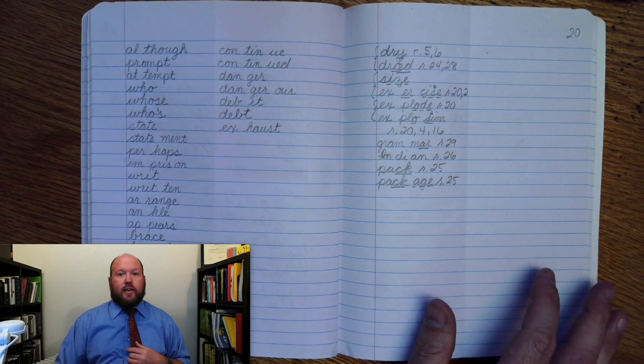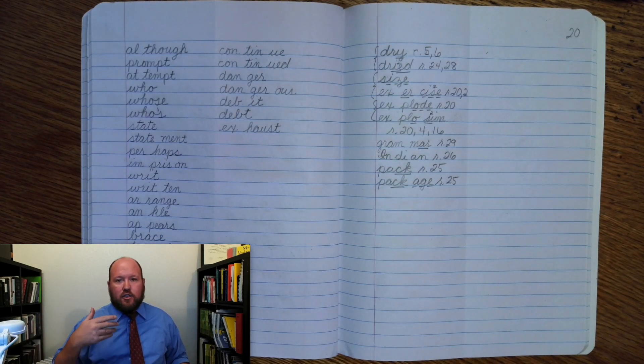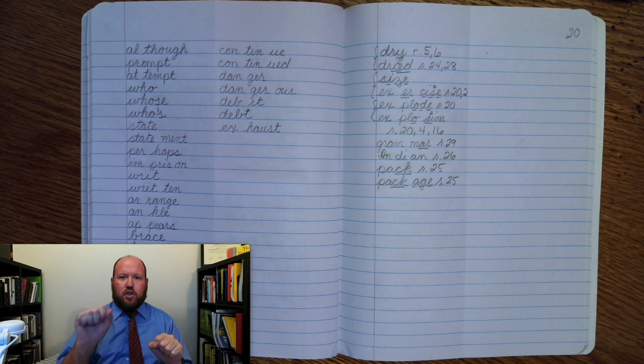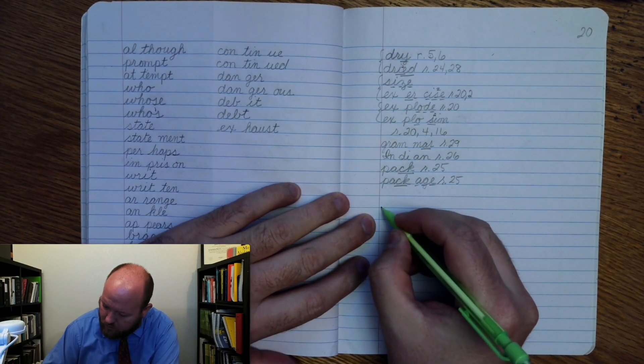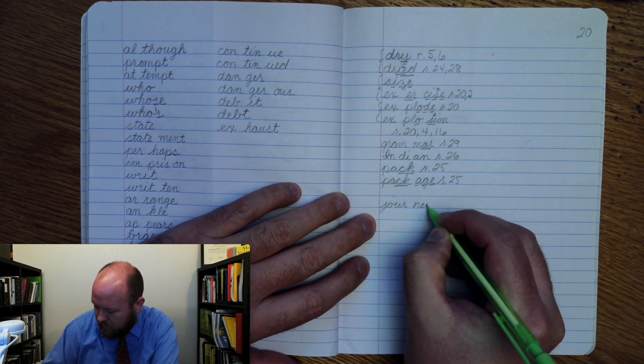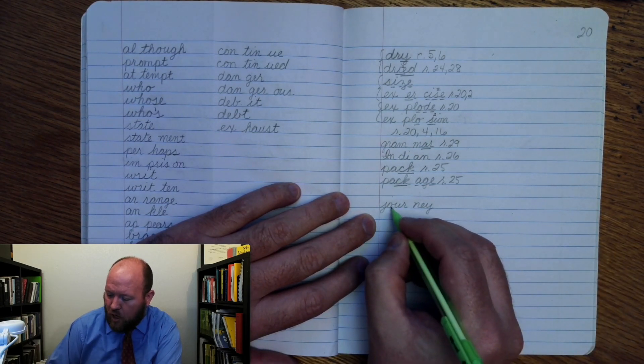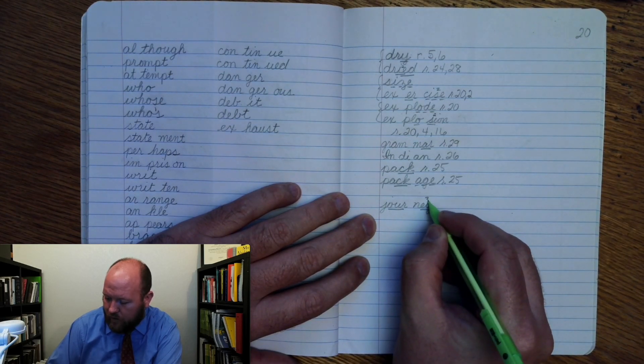And the first word is journey. So a journey is if you go on a trip, you're going on a journey. Journey, base word journey. J-er, N-I. Journey. Write it: J-er, N-I. Markings: J-er once, N-I once, three. Journey.